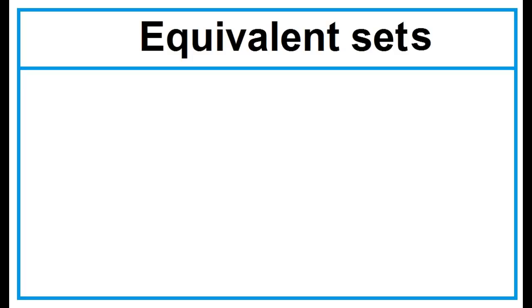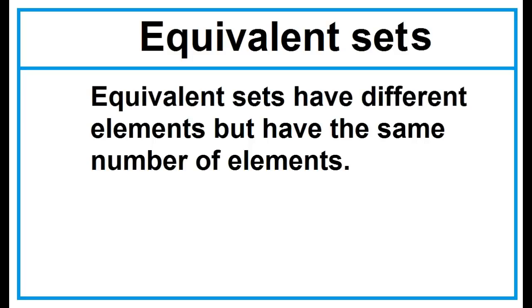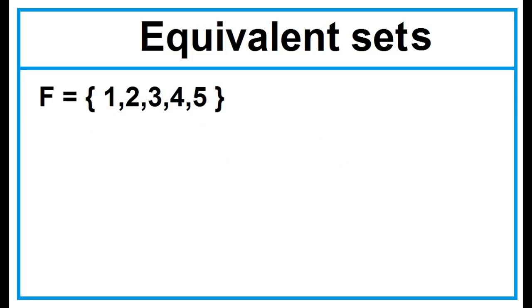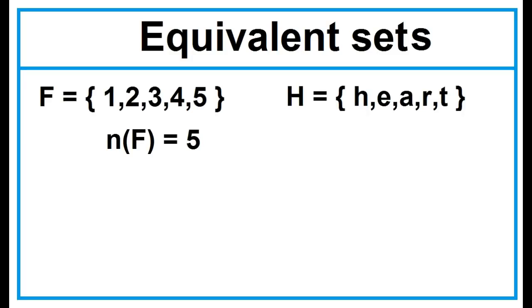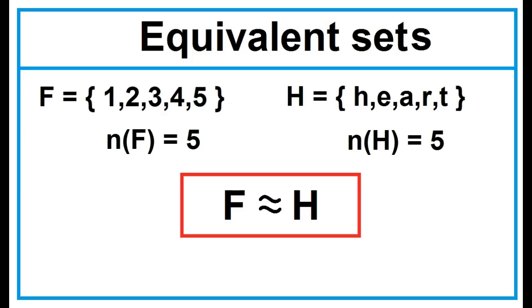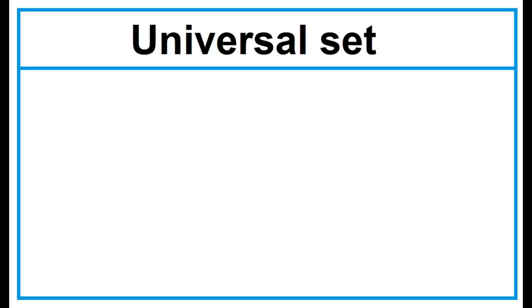Equivalent Sets have different elements but have the same number of elements. Example: Given Set F and Set H, the cardinality of Set F is 5 and the cardinality of Set H is 5. The two sets have different elements but the same number of elements. Therefore, Set F is equivalent to Set H.